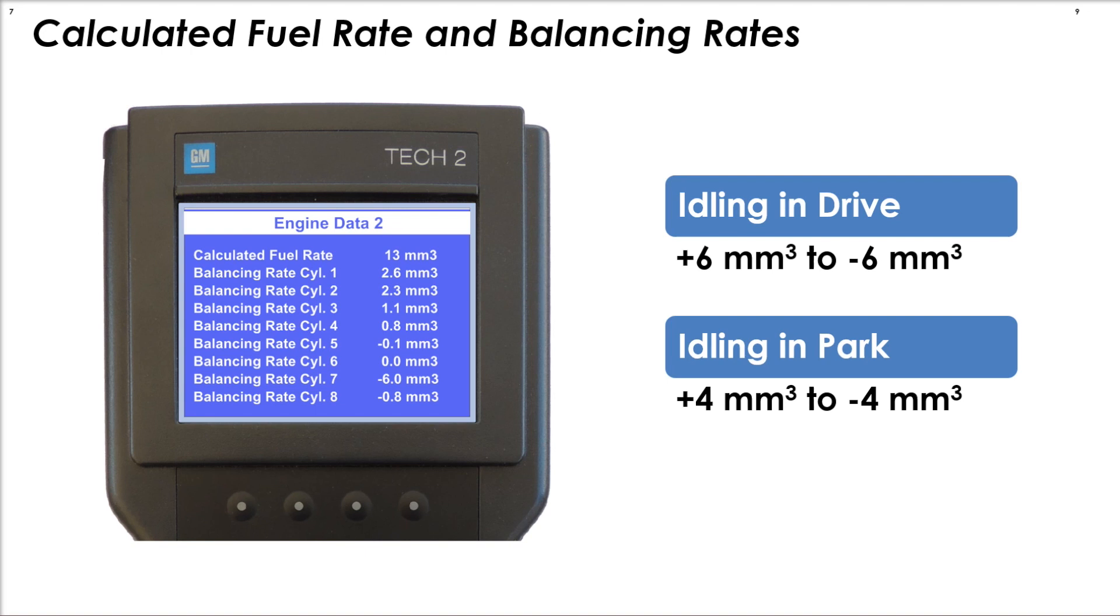According to GM, balancing rates are okay if they are from plus six cubic millimeters to minus six cubic millimeters idling in drive, or from plus four cubic millimeters to minus four cubic millimeters in park.